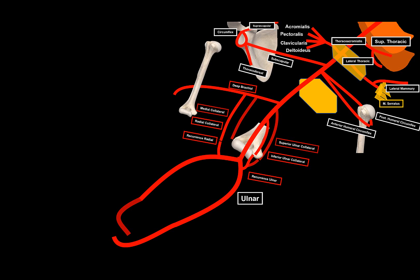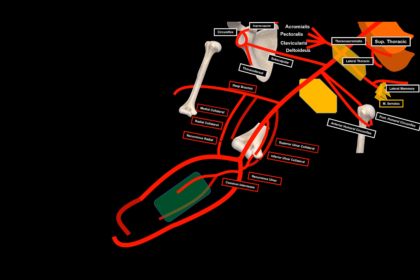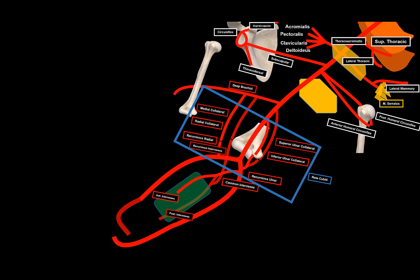The medial collateral artery has its own special partner. The ulnar artery sends out the common interosseous artery, which divides into two branches: one going behind the interosseous membrane (posterior interosseous) and one in front (anterior interosseous). Since the medial collateral artery is located behind the elbow, its communicating partner is the recurrent interosseous artery from the posterior interosseous artery. Together, all of this forms the rete cubiti — the vascular network in the region of the elbow.